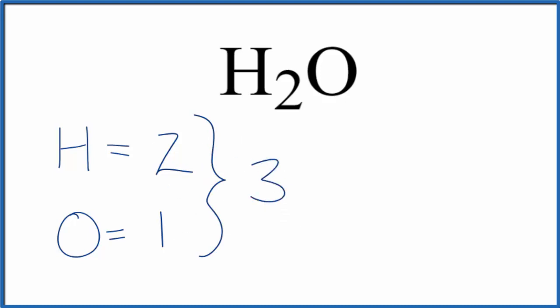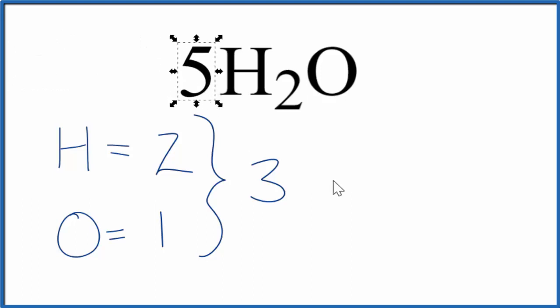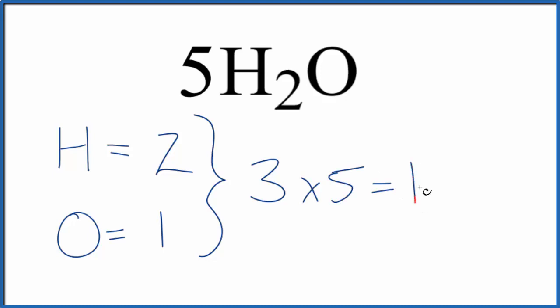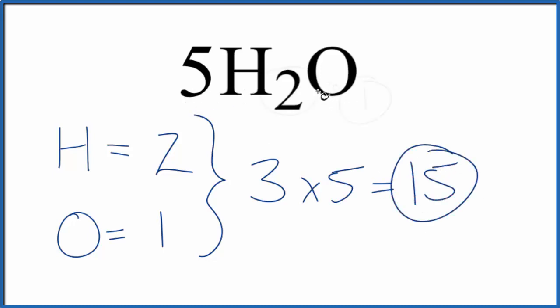So for 5H2O, all we need to do is multiply 3 times 5, and that gives us 15 total atoms for five water molecules — 5H2O.